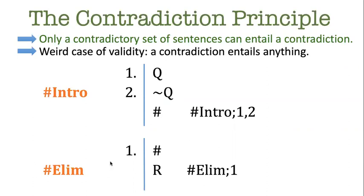How about contradiction elim? Well, whenever you have the contradiction symbol, you're allowed to write any sentence at all that you want, any random sentence like R. Because remember that weird case of validity, a contradiction entails anything. So any random sentence R would follow from a contradiction.